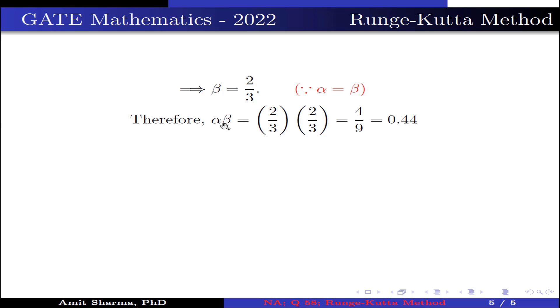Therefore, the product αβ = (2/3)(2/3) = 4/9 ≈ 0.44. Hence, the value of product αβ is 0.44.